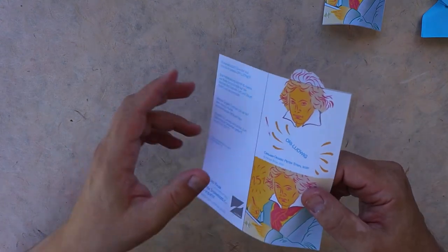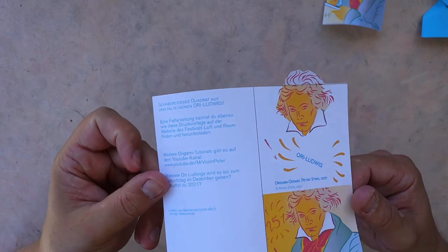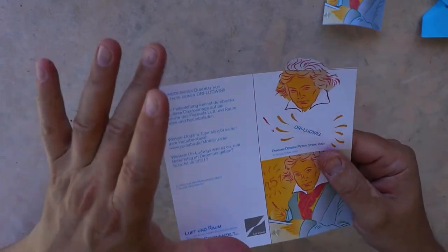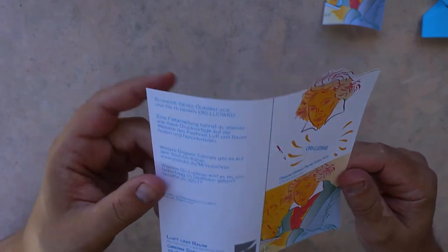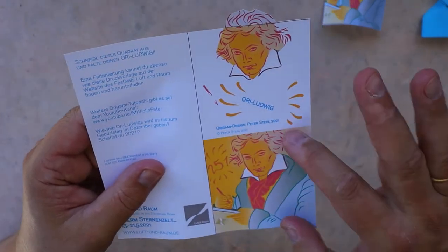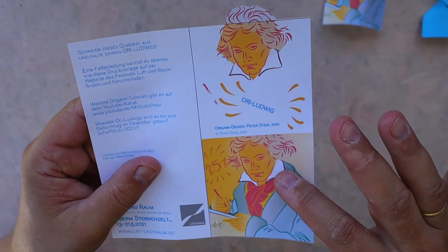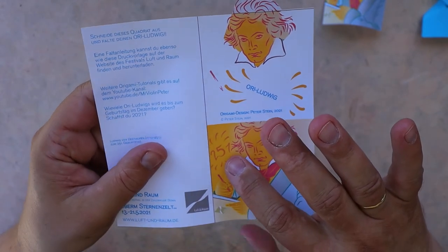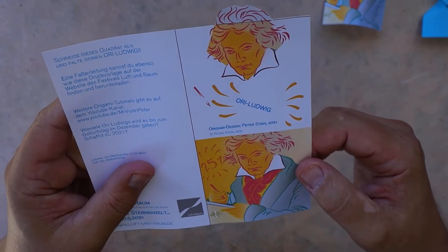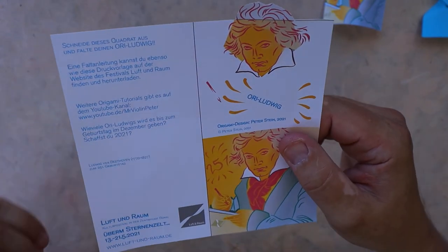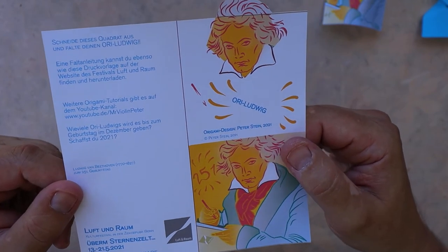All you have to do is just print out and cut out this template. You have a 15 by 15 centimeters square after that. Here's this little image from Beethoven's 251st birthday and it is connected to our festival Luft und Raum.